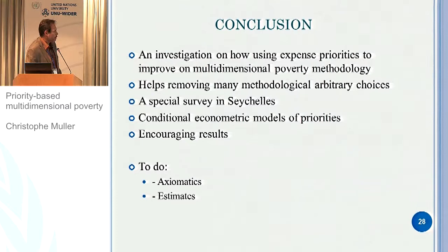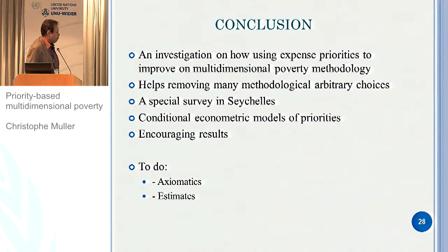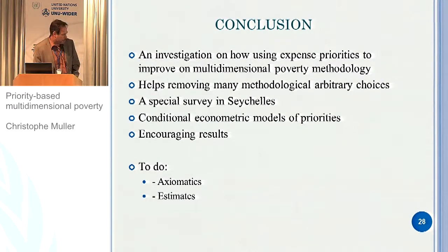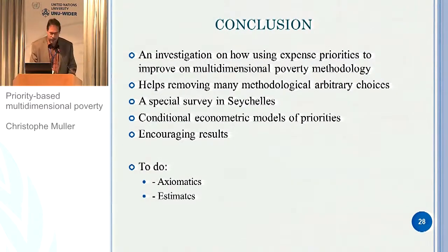You can understand things with multi-dimensional poverty that you couldn't see with monetary poverty analysis. Of course, the two notions of poverty are different — neither is right or wrong — but there is real potential to find interesting features using these approaches. The idea is to use expenditure priorities to improve multi-dimensional poverty methodology and remove arbitrary choices. You need a special survey but it's really not costly. The axiomatic and estimation work is still in progress. Thank you — any comments are welcome.